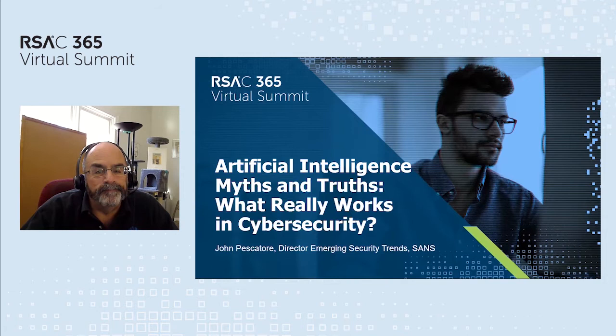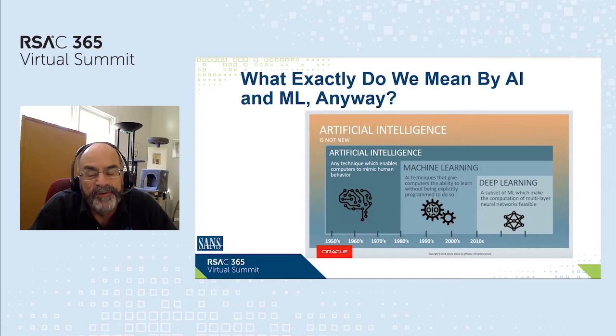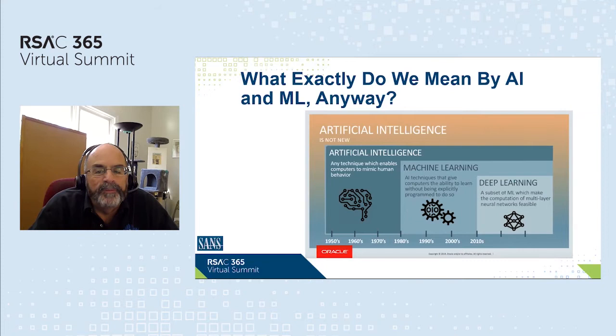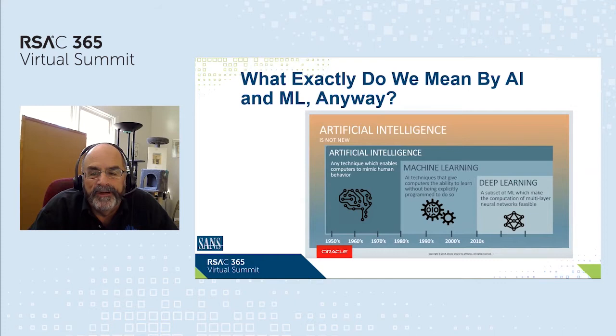A little terminology: we're going to talk about AI, or artificial intelligence — that's us attempting to make computers mimic what humans do as far as problem solving generally. We're going to zero in on a subset of that, which is machine learning, where we're trying to get the computer to solve problems without being rigidly programmed — not just calculate rocket trajectories, but figure out the best way to hit a moving ship from another moving ship.